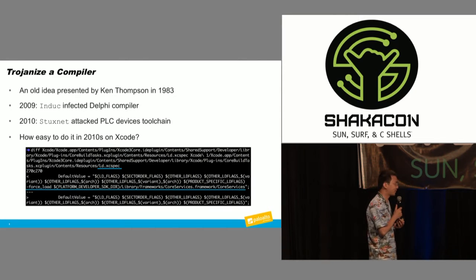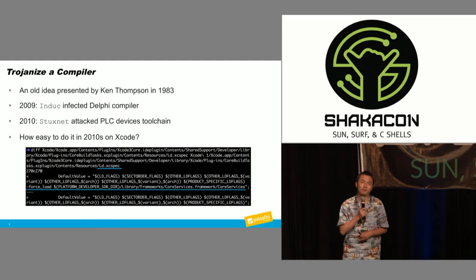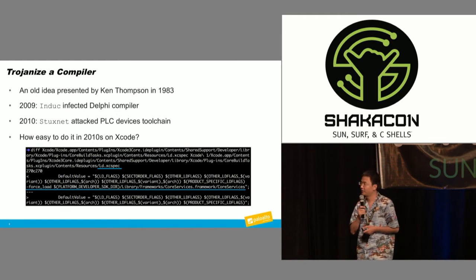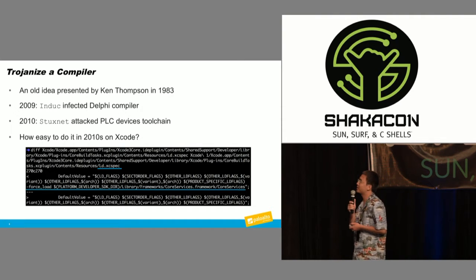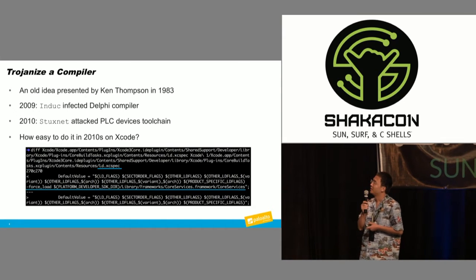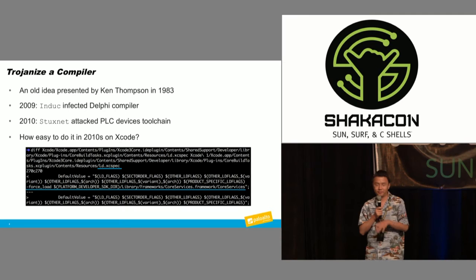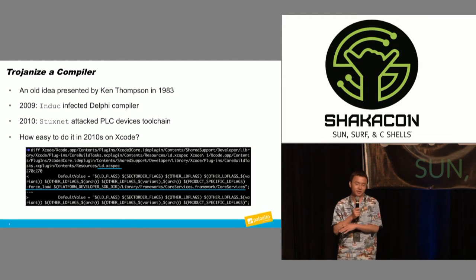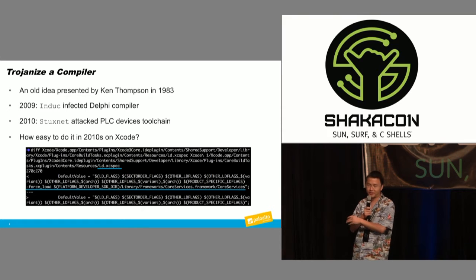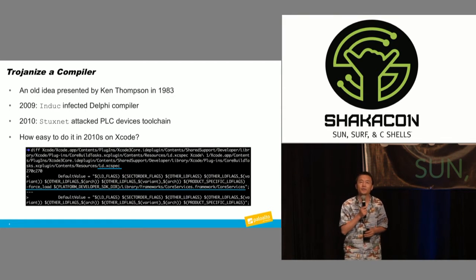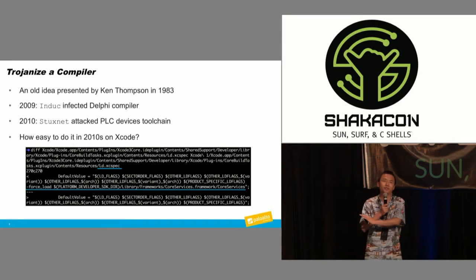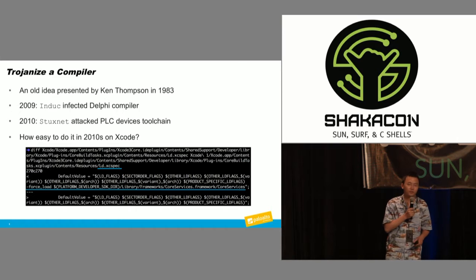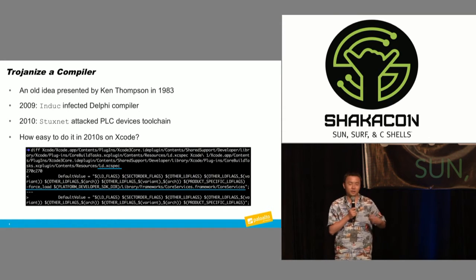So on the iOS platform, how easily could you infect Xcode — the only compiler for iOS apps? The answer is a single line. There is an ld.xc spec file, which is actually a text file, and it includes many configurations used for linking. There is a default value for linking parameters, and you could add a force-load with a path to an object file. After this single-line change, every code inside that object file will be linked into your app, and you can use all tricks to automatically launch this code during runtime.